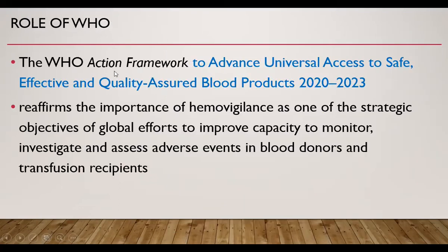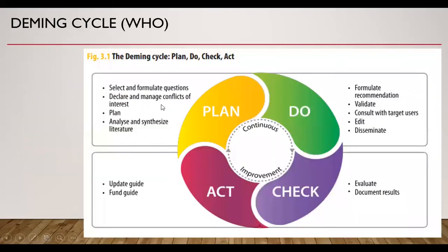The WHO action framework to advance universal access to safe, effective, and quality-assured blood products 2020–2023 reaffirms the importance of Hemovigilance as one of the strategic objectives of global efforts to improve capacity to monitor, investigate, and assess adverse events in blood donors and transfusion recipients. Hemovigilance is a continuous quality improvement process following a classical PDCA cycle — Plan, Do, Check, Act — as a continuous improvement cycle. There are six Rs according to WHO: recognize, respond, record, report, remedy, and review all adverse events, transfusion reactions, or donor reactions.